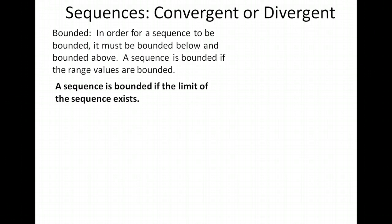In order for a sequence to be bounded, it must be bounded both below and above. In other words, the range of values in the sequence must be approaching a number or have an endpoint. A sequence is bounded if the limit of the sequence exists.